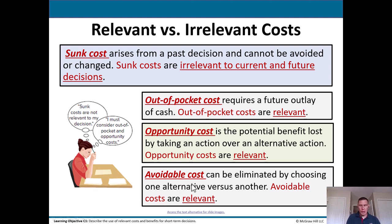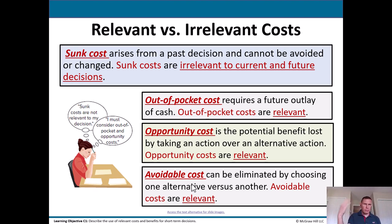Finally, avoidable costs can be eliminated by choosing one alternative over another, so avoidable costs are relevant. For example, if you choose option A, you avoid the costs associated with B, and conversely, if you choose B, you avoid the costs associated with A.